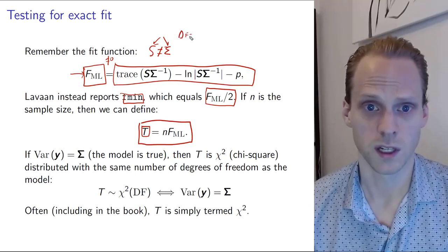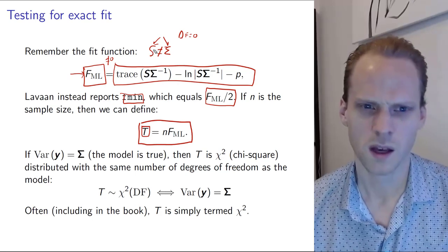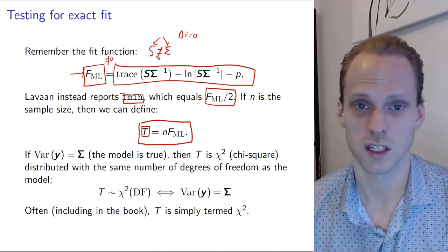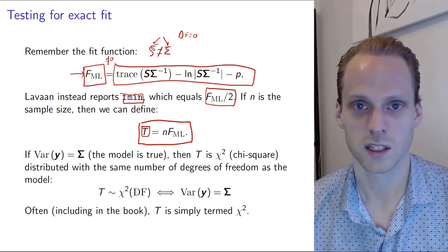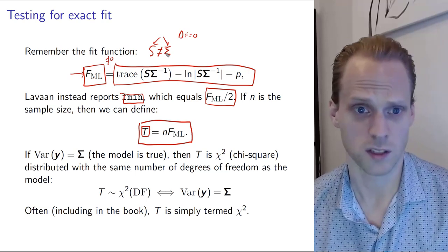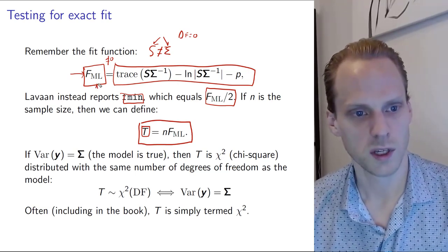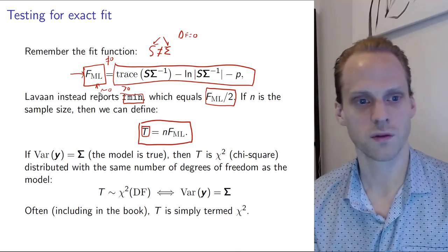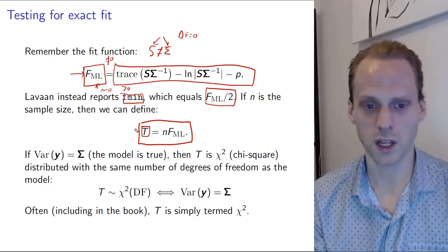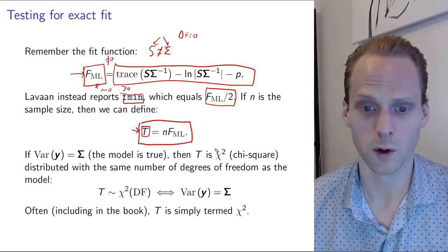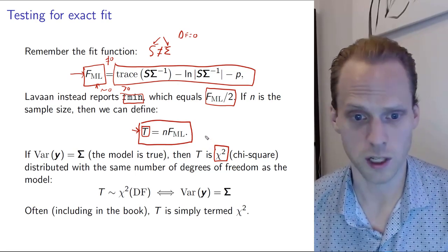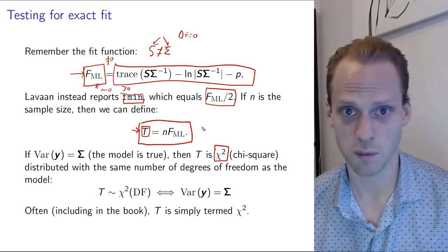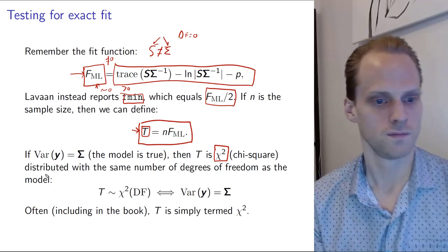Your data comes from a sample, so by definition this will not be true except when degrees of freedom equals zero. Otherwise it will be somewhere close to S if you have good fit and not close to S if you have bad fit. FML will be near zero if it's good and far above zero if it's bad fit. We define this with the T statistic, often called the chi-square statistic.